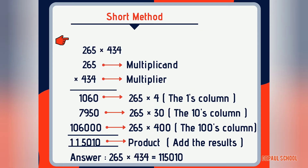Now let me show you the short method for this sum. Here 265 is the multiplicand and 434 is the multiplier. First, 265 is multiplied by 4 — the ones column is multiplied first. Then 265 is multiplied by the tens column in the second row, and then by the hundreds column in the last row. After multiplying all three rows, we add the results. Numbers are written underneath each other according to place value, multiplied vertically starting from the ones column and moving left, then all multiplication lines are added to give the final answer.